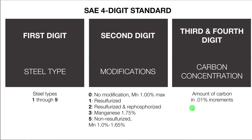The third and fourth digits tell you the amount of carbon in 0.01% increments. So if the third and fourth digits are a three and a zero, then you would know that there's 0.30% carbon.